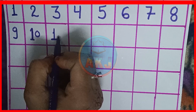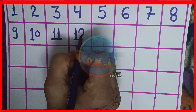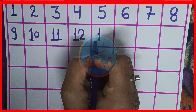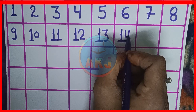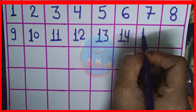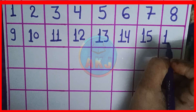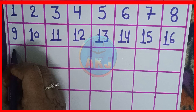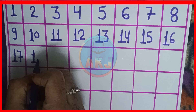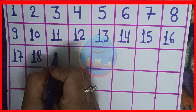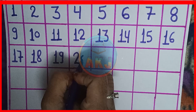Next hai, 1, 1, 11. 1, 2, 12. 1, 3, 13. 1, 4, 14. 1, 5, 15. 1, 6, 16. 1, 7, 17. 1, 8, 18. 1, 9, 19. 2, 0, 20.